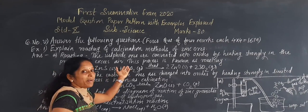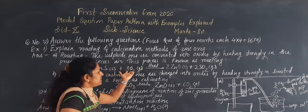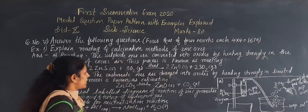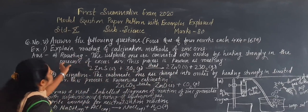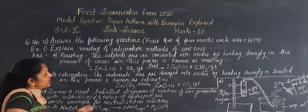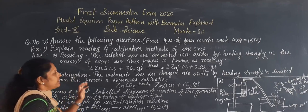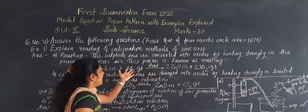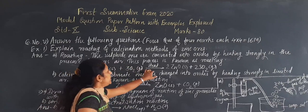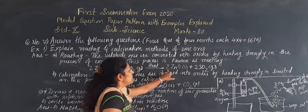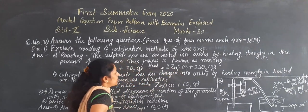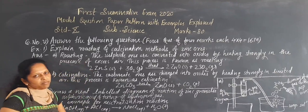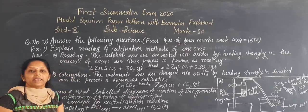If oxygen is present, it reacts with the zinc and there is formation of zinc oxide. The ore is in the form of a solid and the oxides are formed in acid form. This is the roasting method.